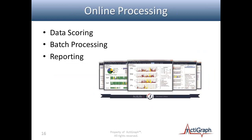Another feature is online processing. We're looking to move things like data scoring and batch processing and reporting online, out in the cloud, so you can select several files to be processed at one time rather than going into ActiLife and opening individual files one by one. You can identify files online and allow them all to be scored simultaneously, then run reports on multiple files instead of on a file-by-file basis.